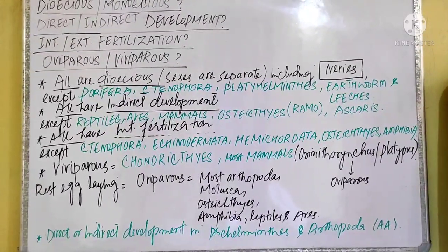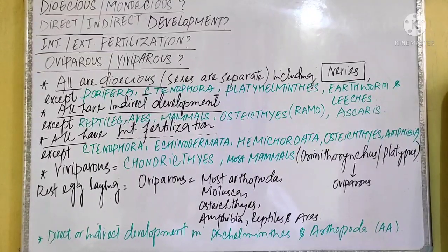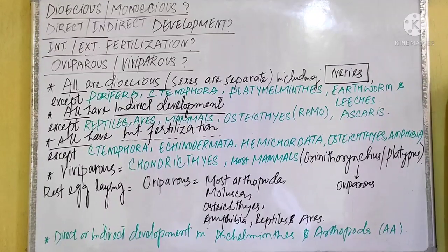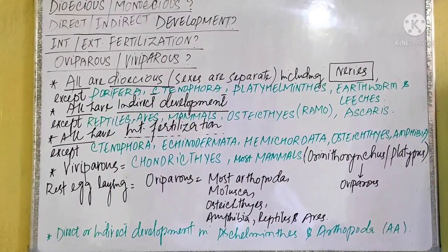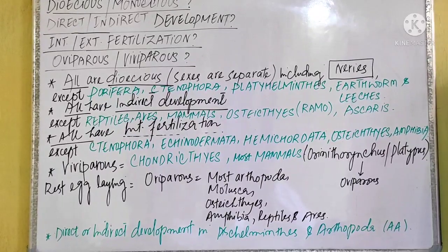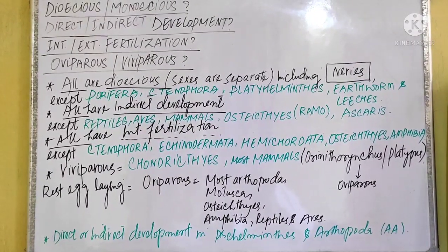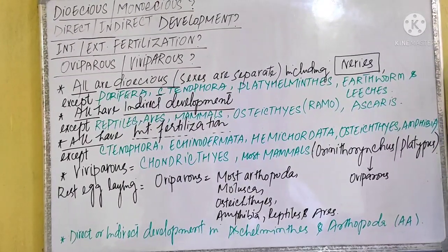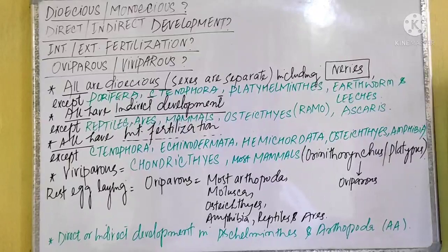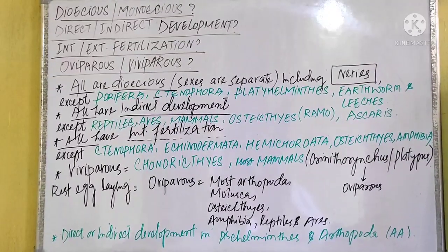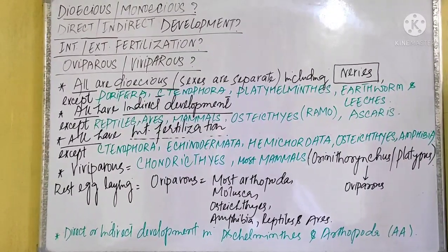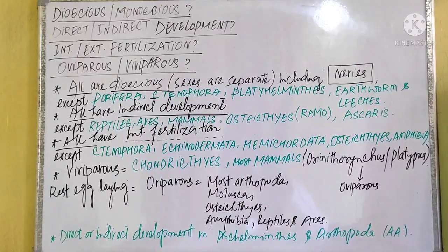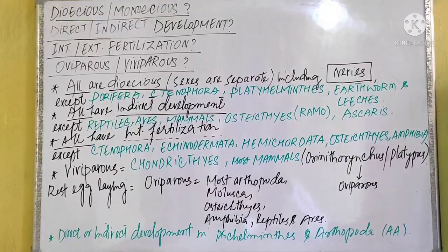One last point from your NCERT text: in Aschelminthes and Arthropoda, there can be either direct or indirect development. So remember the NCERT line that there is either direct or indirect development in Aschelminthes and Arthropoda. This completes the topic covering dioecious, monoecious, direct development, indirect development, internal fertilization, external fertilization, oviparous, and viviparous animals. I hope this video has helped you. Best of luck to all of you — do remember me in your prayers!